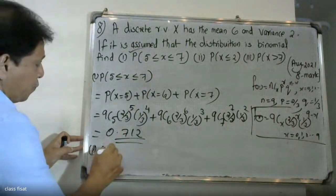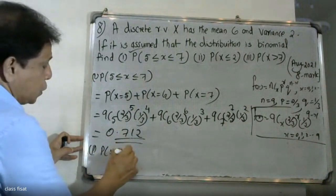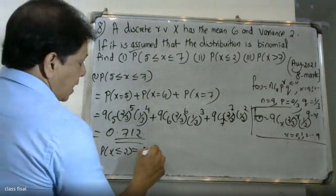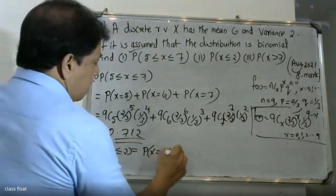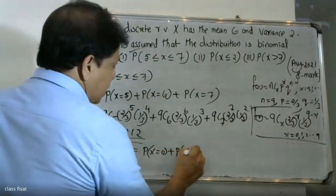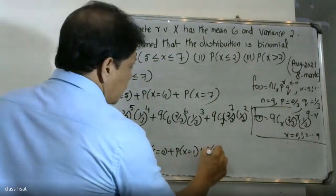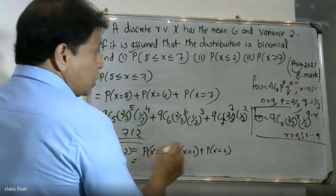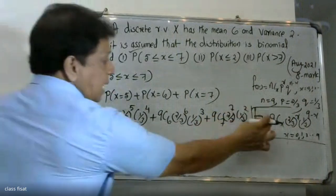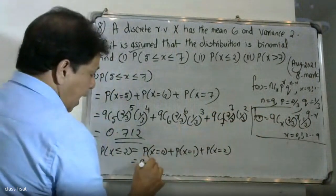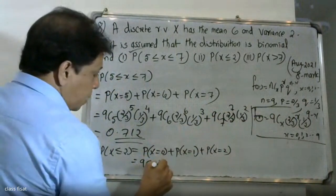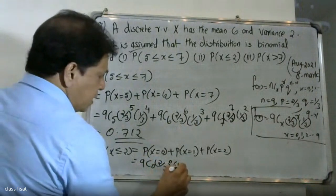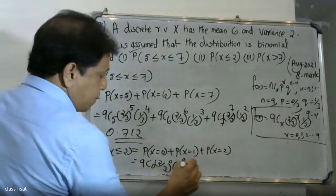For P(x ≤ 2): this equals P(x=0) + P(x=1) + P(x=2). For x=0: 9C0 times (2/3)^0 times (1/3)^9. For x=1: 9C1 times (2/3)^1 times (1/3)^8.